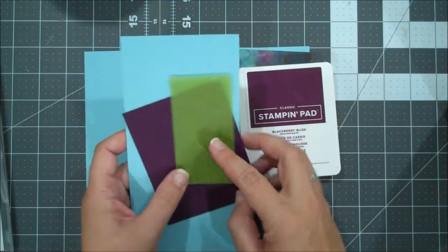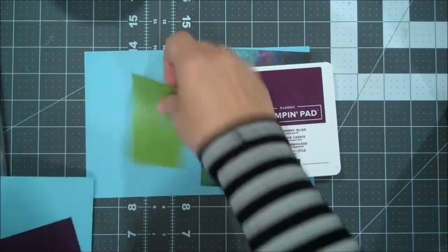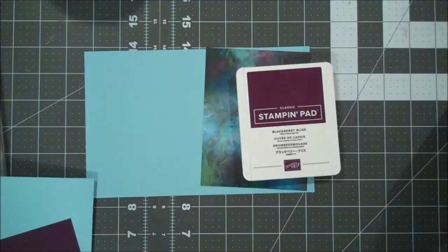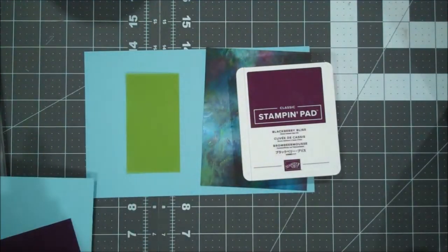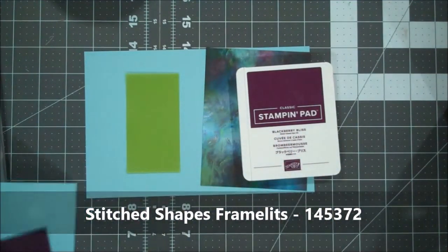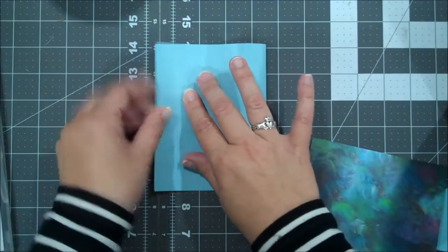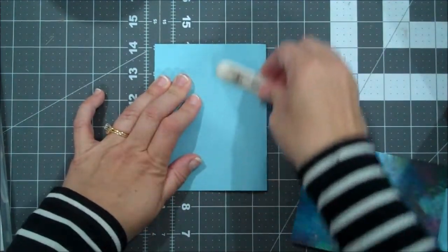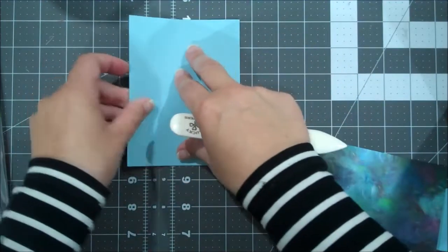We're going to use our blackberry bliss ink pad. We have a piece of the old olive vellum. This piece is cut 2 by 3 and 3 quarters. And then I'm going to use a circle from our stitched shapes framelit as well. So we'll pull in our big shot for that too. This is going to be a very quick and simple card. But I just wanted to show you guys some of the beautiful suites that are coming.